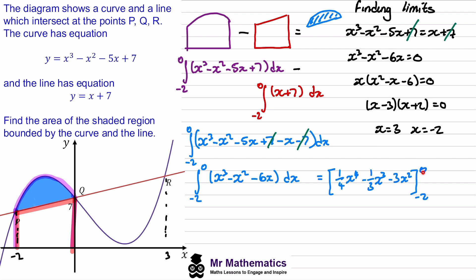When we substitute in the upper limit we get zero, and then we'll substitute in the negative two. So we'll get 16 divided by four, negative eight divided by three but negative of negative eight thirds, so positive eight thirds, and then four times the negative three, so negative 12.